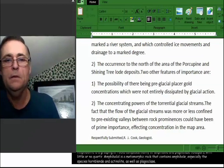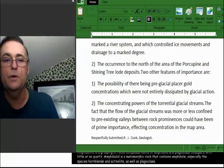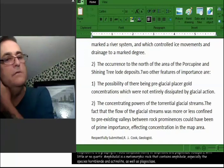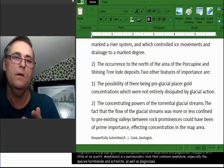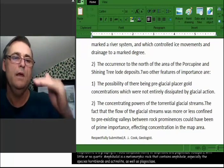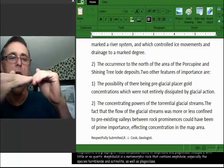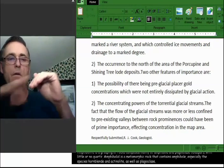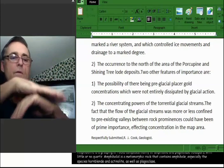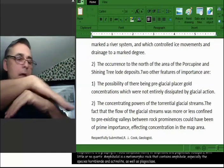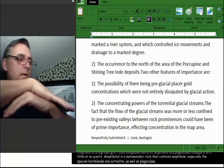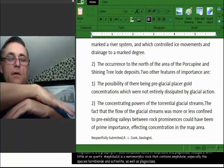The other one here is the possibility of there being pre-glacial placer gold concentrations which were not entirely dissipated by glacial action. Well, I was explaining that at the beginning. When glaciers go south and they come up against a ridge, they're carrying a lot of the materials, and that material gets scraped off. It stays here. And then they go over and they go down and they drop even more on the lee side. And then when they go down, they take everything that they can take with them because there's different layers in the glacier. It's not all one layer.